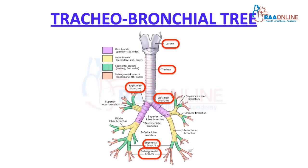This is the tracheobronchial tree anatomy. You have the larynx, which then goes to the trachea. The trachea divides into the right main bronchus and the left main bronchus, which in turn divide into the lobar, then segmental, then sub-segmental bronchi, and this process continues down to the terminal bronchioles.